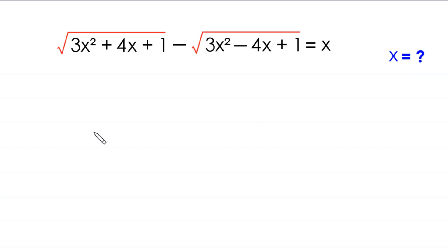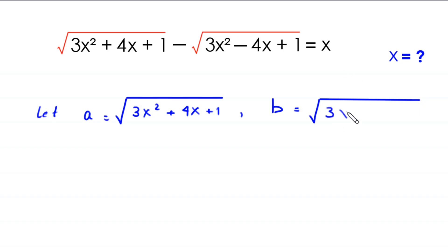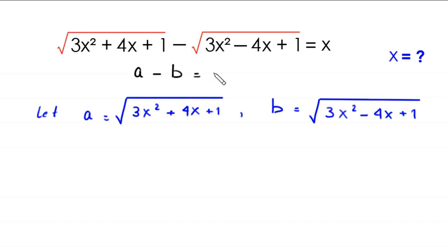First we suppose that a is equal to the expression square root of 3x squared plus 4 times x plus 1, and b is equal to square root of 3x squared minus 4 times x plus 1. We substitute a and b in this equation, so the original equation becomes a minus b is equal to x. Let's call this equation number 1.